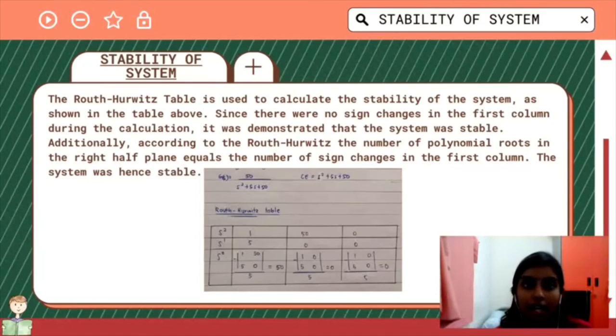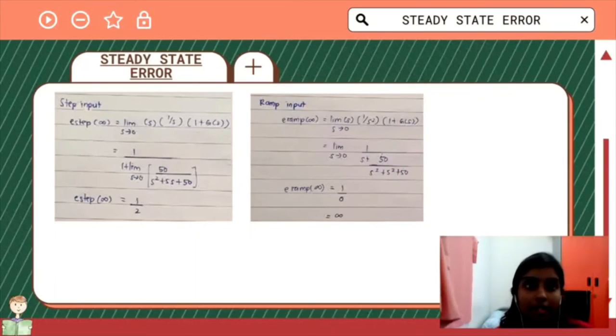Stability of system. In order to calculate the stability of system we need to build Routh-Hurwitz table. Since there were no sign changes in the first column during the calculation, it is proven that the system was stable because according to the Routh-Hurwitz, the number of polynomial roots in the right half plane equals the number of sign changes in the first column. Next, steady state error. We need to find step input and ramp input. As for step input we get 1 over 2, and for ramp input we get infinity.